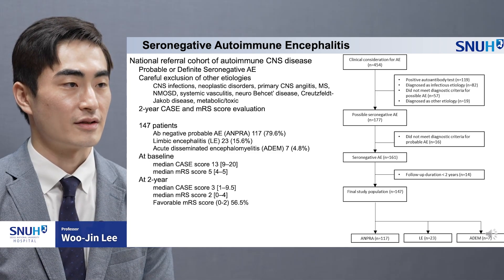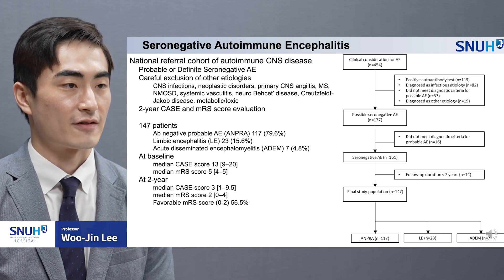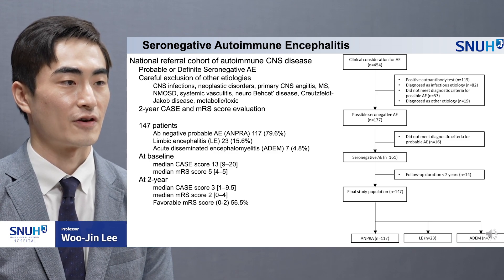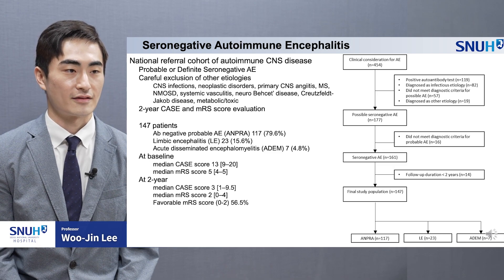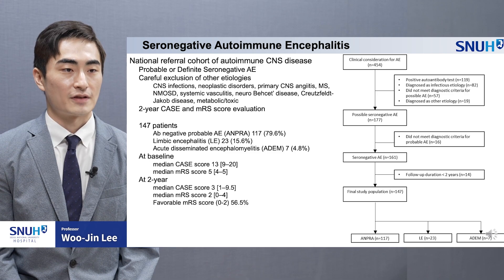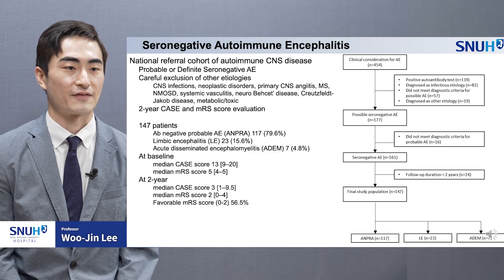For every patient, other possible etiologies including infections, neoplastic disorders, primary CNS angiitis, MS or NMO spectrum disorder, systemic vasculitis, neurobehcet's disease, CJD, or metabolic toxic encephalopathy were carefully evaluated and excluded. Among them, about 80% were classified as antibody negative probable autoimmune encephalitis, which we named as the ANPRA subtype, 15% as autoimmune limbic encephalitis, and the remaining 5% as acute disseminated encephalomyelitis.